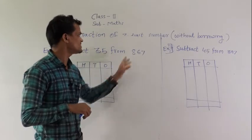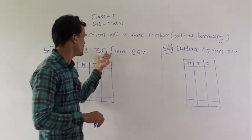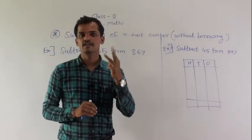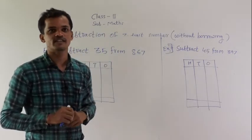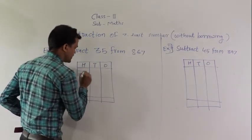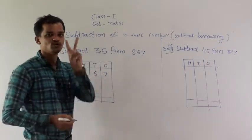So, here between these 2 numbers, this number is greater because it has 3 digits, it has 2 digits, and we learn 3-digit numbers are always greater than 2-digit numbers. So, write this number upside: 867.